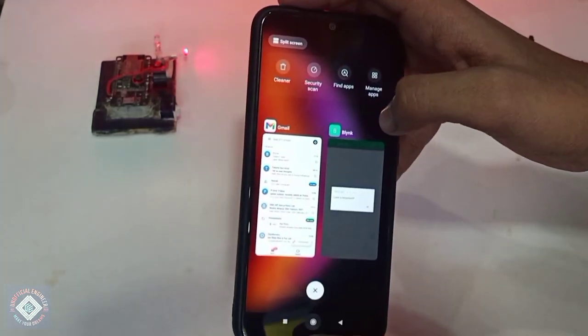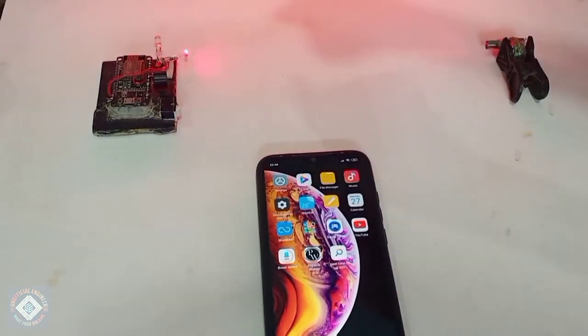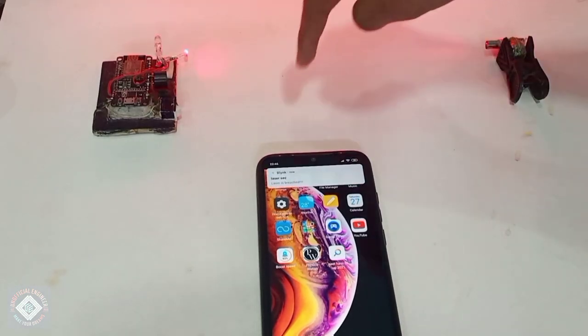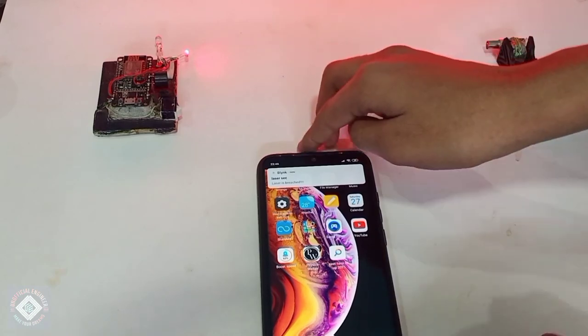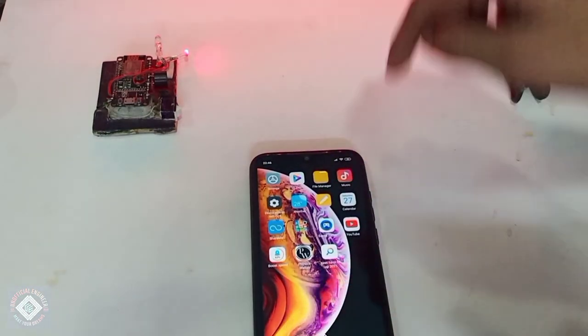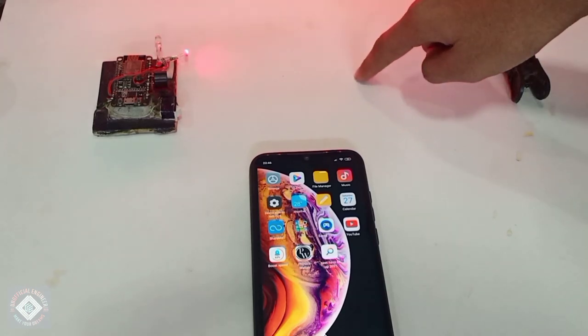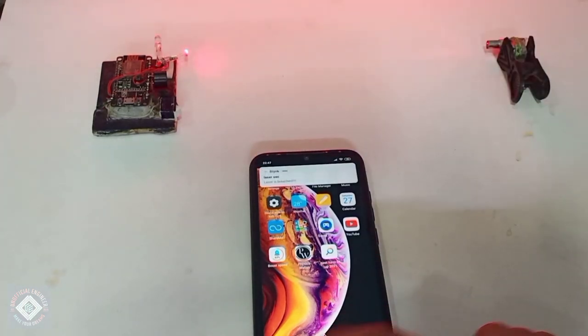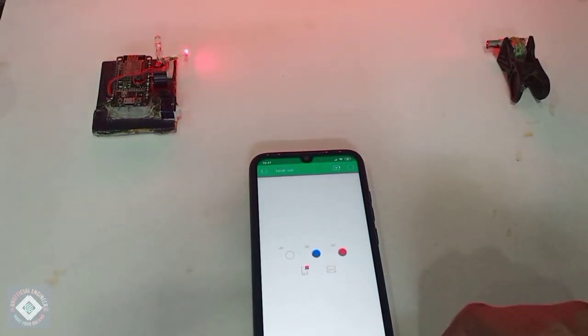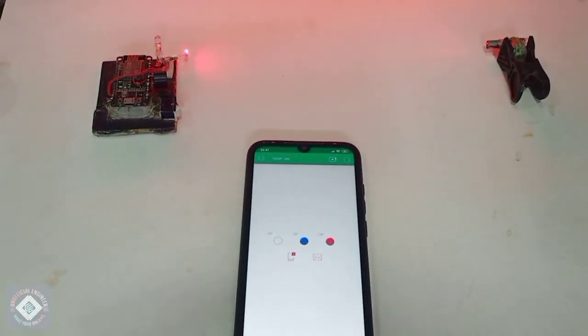As we put in the code, you can see it's working flawlessly. Whenever I pass the finger, the floating notification also comes if you give the permission to Blink application for notifications. As soon as I pass my finger over the sensor I get instant notification in my Blink and Gmail applications. It will also work if I move my finger fast.